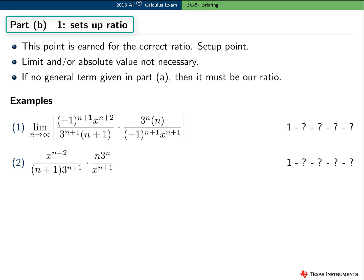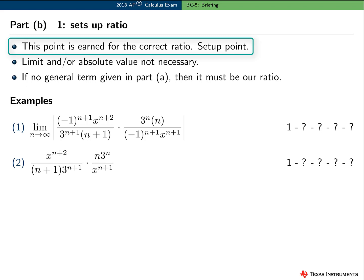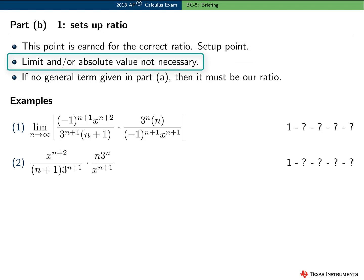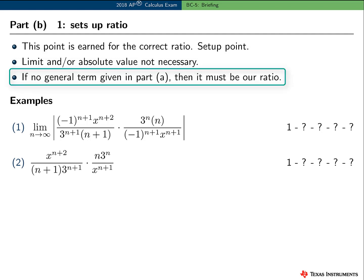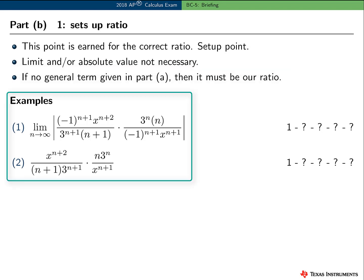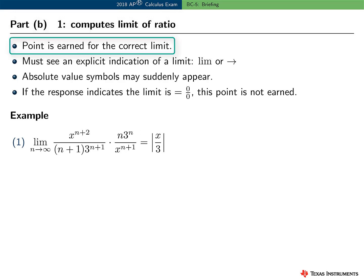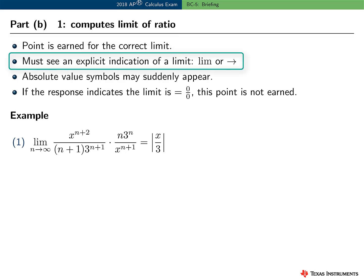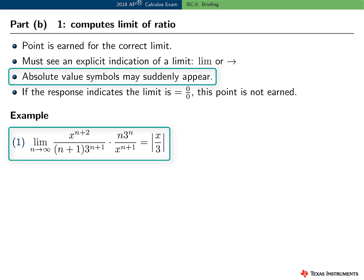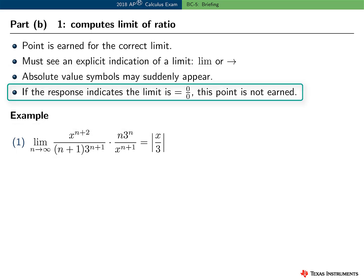In Part B, the first point was for setting up the ratio associated with the ratio test. This is a setup point and is earned for the correct ratio only. The limit and/or the absolute value symbol are not necessary to earn this point. If there is no general term given in Part A, then this must be the correct ratio. Here are some common example responses — each earns the first point. The second point in Part B was for computing the limit of the ratio, earned for the correct limit. We have to see explicit indication of a limit: either the symbol 'lim' or an arrow is the minimal notation required. It's okay in this problem if the absolute value symbol suddenly appears. If the response indicates that the limit is 0 over 0, then the point is not earned.